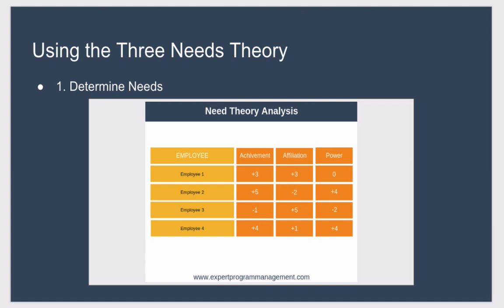There are just two steps to using the model. The first step is to determine needs. You can use a simple table to understand the needs of each team member. For each need in the table, all you need to do is score each team member from minus 5 to plus 5, where plus 5 indicates a very strong need and minus 5 would be a very strong aversion. To help you complete this table, you can think about the actions and behaviour you've seen your team members show in the past.